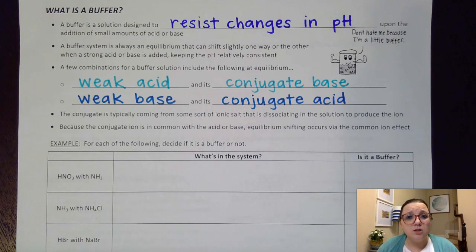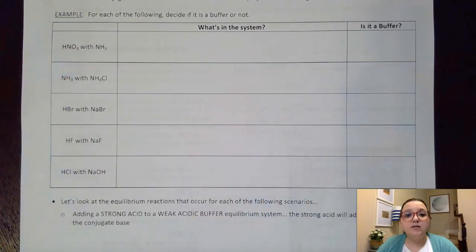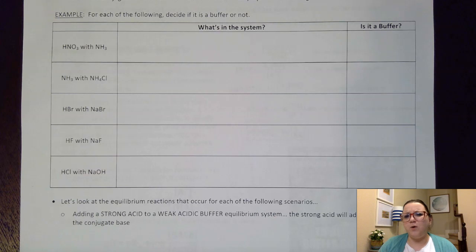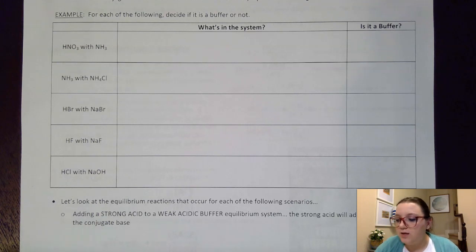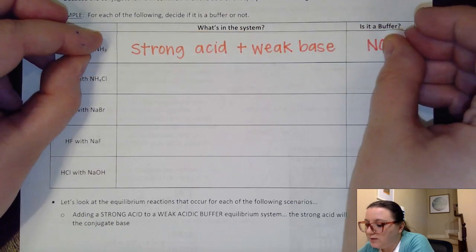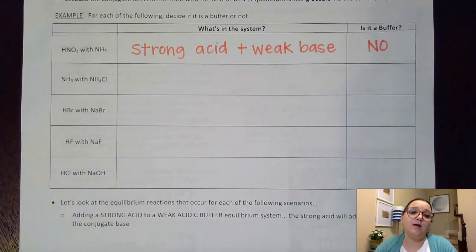Let's look at some examples and ask ourselves if we have buffer solutions. The first one is HNO3 with NH3. HNO3 — I recognize that as an acid because of the hydrogen at the front, but nitric acid is on the strong acid list. So off the bat, if I have a strong acid, this can't be a buffer system because it won't make equilibrium. So even though NH3 ammonia is a weak base, this is not going to be a buffer system — I don't have a weak base with its conjugate or a weak acid with its conjugate.